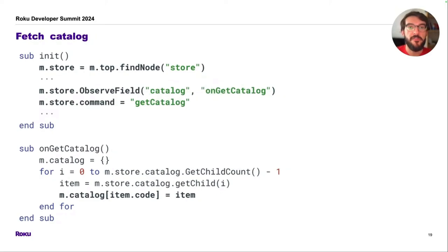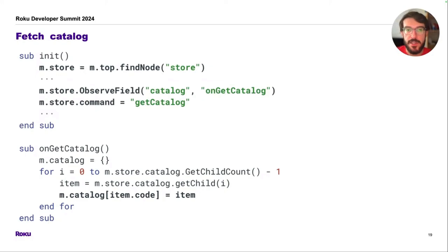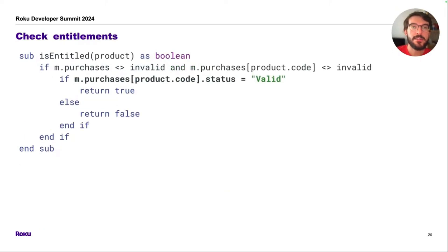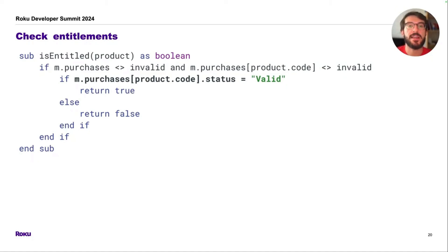Next, we fetch the available products from the catalog. Again, we retrieve the channel store node using its ID, then start observing the response to the getCatalog command and execute it. When we get a response, we store all the catalog products in the context in an associative array indexed by the product's code. Next, we check if the user is already entitled to some product based on their previous purchases. Given a product, we check if we have previously purchased it and if the purchase still has a valid status. If it does, we grant access to the content.